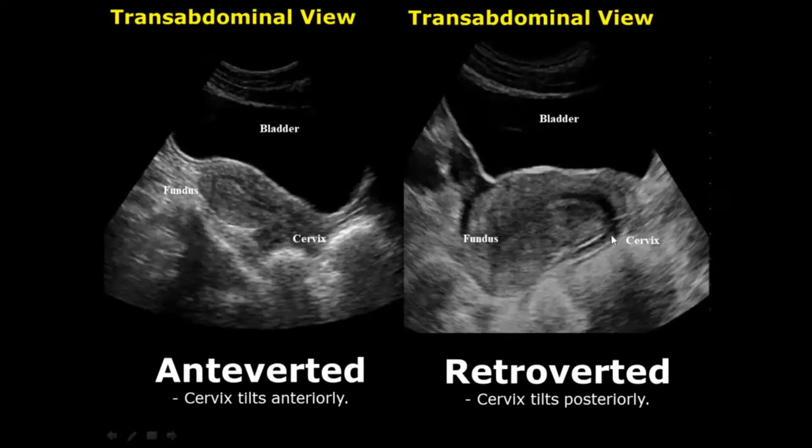On the right side is the retroverted uterus. Here you can notice the cervix is facing posteriorly or downwards. Again, there is no noticeable bend of the body of the uterus, so we do not comment on it.